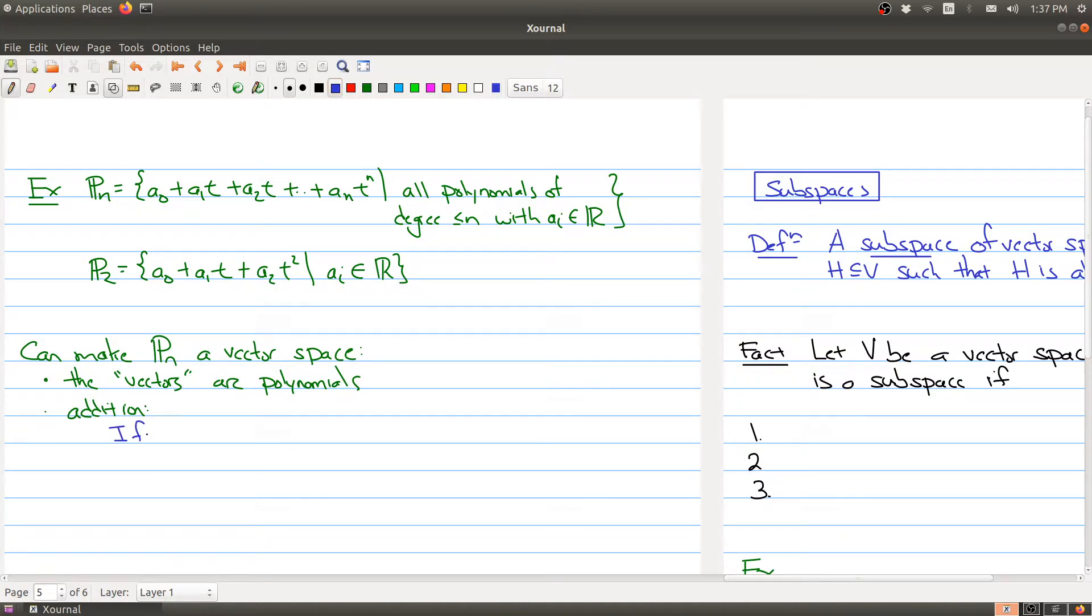Well addition works as follows. It's basically the polynomial addition that you're used to from calculus. So let's say you have one polynomial and you have a second polynomial both of degree n or less. Then the sum of these two polynomials is simply the sum of the two polynomials. So you add them the way that you would do in calculus.